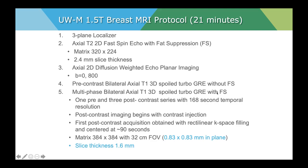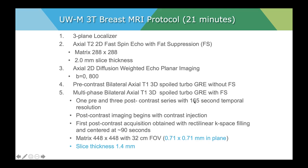The 1.5 Tesla protocol from the University of Wisconsin-Madison had sequences nearly 3 minutes long, yielding a slice thickness of 1.6 millimeters with in-plane resolution of 0.83. By going to 3 Tesla with the same overall timing — 21 minutes — the resolution improved: 0.83 by 0.83 was converted to 0.71 by 0.71, and slice thickness went from 1.6 millimeters down to 1.4 millimeters. That is the potential advantage of increasing field strength.